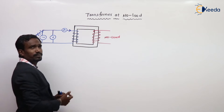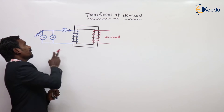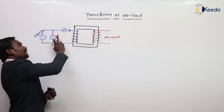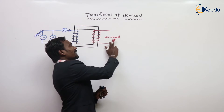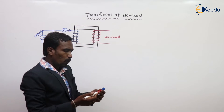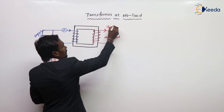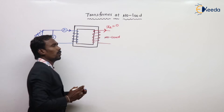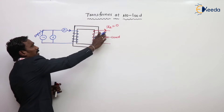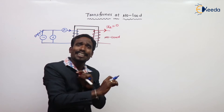This is my transformer. Primary winding is given by rated supply voltage, and a voltmeter and ammeter are connected here. The secondary side is at no load condition — open circuit. When there is no load, then there is no current. The current on the secondary side is zero, and the load is zero.